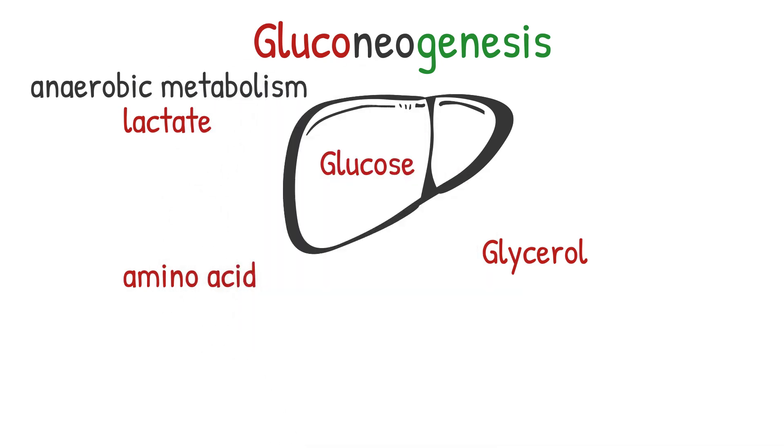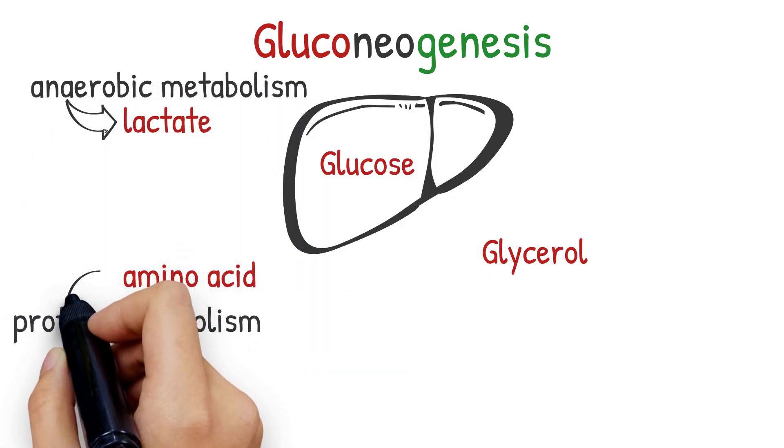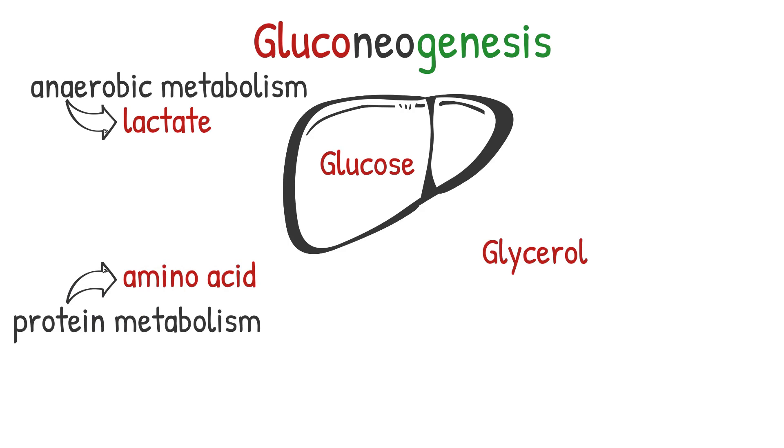Lactate is a product of anaerobic metabolism, amino acids are provided by breaking down of proteins and peptides, and glycerol is a product of triglyceride metabolism.